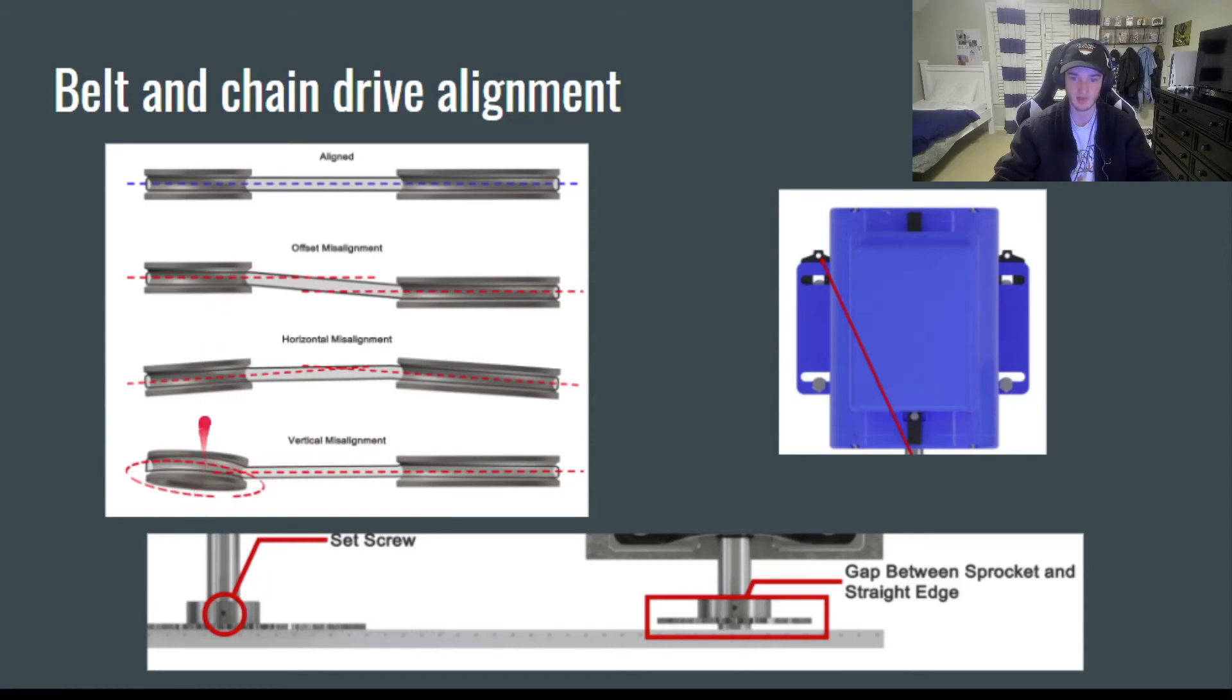So how do I solve each three of these misalignments? For horizontal offset misalignment, this one right here, you're going to loosen the set screws on your motor. So the set screws are these things right here.